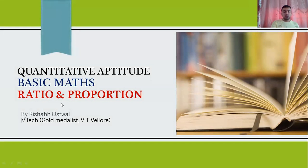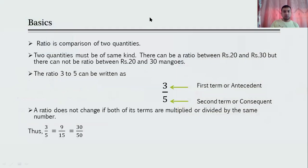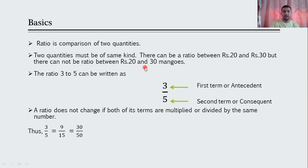Ratio is a comparison of two quantities. The two quantities must be of the same kind. There can be a ratio between ₹20 and ₹30, but there cannot be a ratio between ₹20 and 30 mangoes. So ratio should be of same quantities. The ratio 3 to 5 can be written as 3 upon 5.